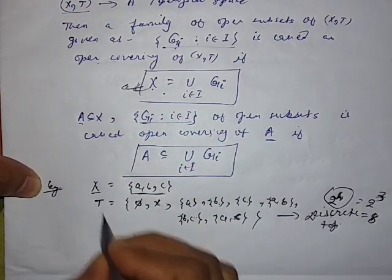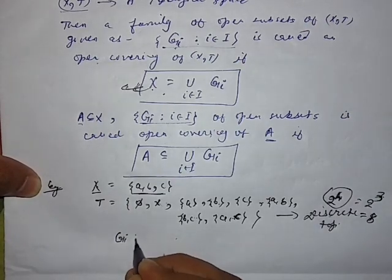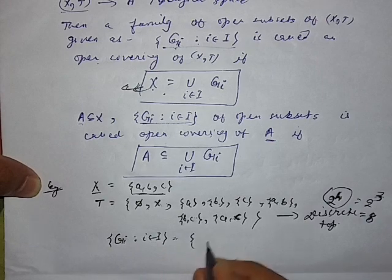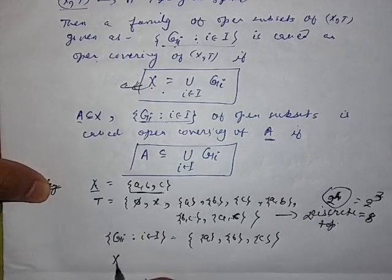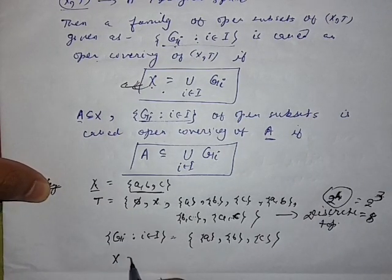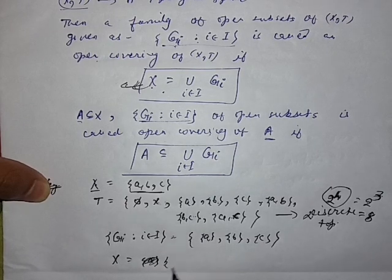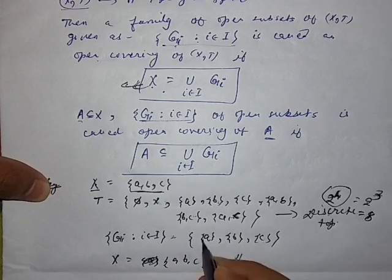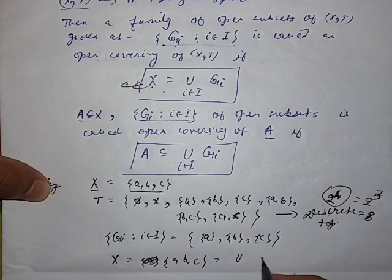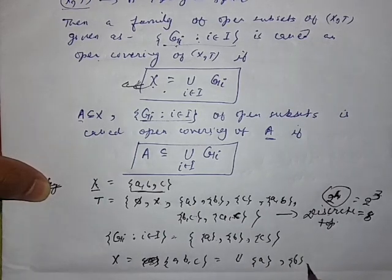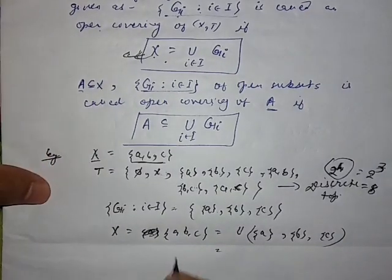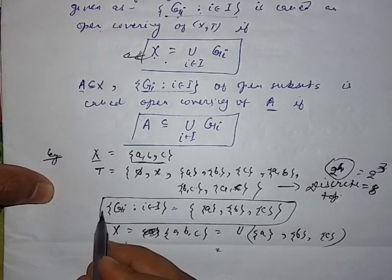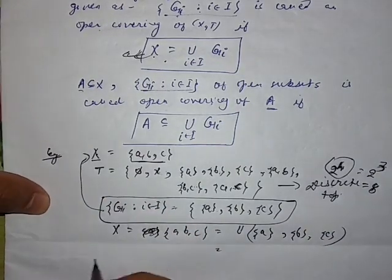From the definition, let the family of open subsets be {{a}, {b}, {c}}. Then clearly X = {a, b, c} equals the union of {a}, {b}, {c}. Taking the union of these subsets gives us {a, b, c}, which equals X. So this family is called an open covering of the set X.